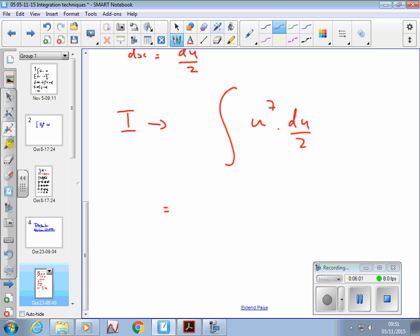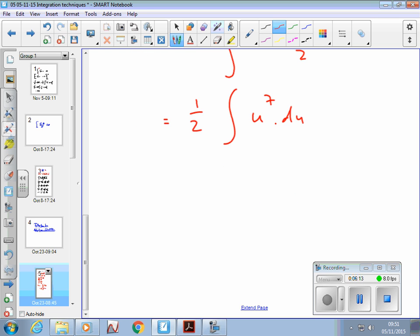Divide by 2 is the same as a half. So I can call this a half of the integral of u to the 7 du. That's probably the first thing I'd do. And then I'd use my table of standard integrals, and that tells you to add 1 to the power and divide by the new power, and then add c.